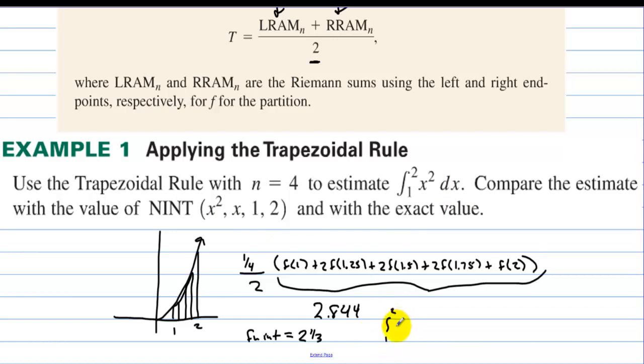We have 1 to 2 of x squared dx. When we integrate, we get 1 third x to the third. And we're integrating that from 1 to 2. We get 8 thirds minus 1 third, which is 7 thirds, which is 2 and 1 third, just like we got with fnInt. So of course this is just going to be an approximation of the actual value.